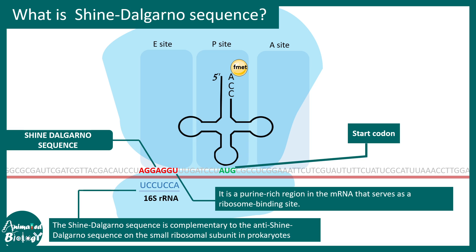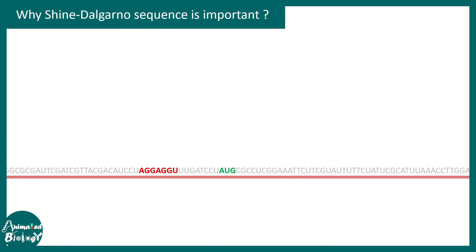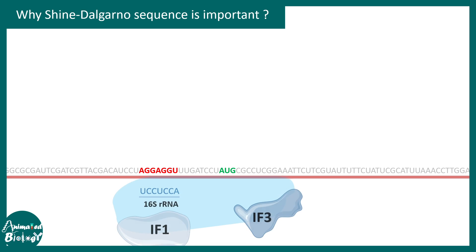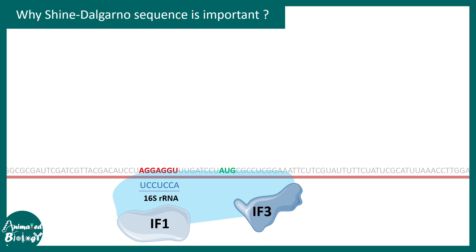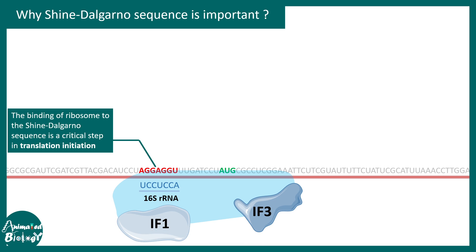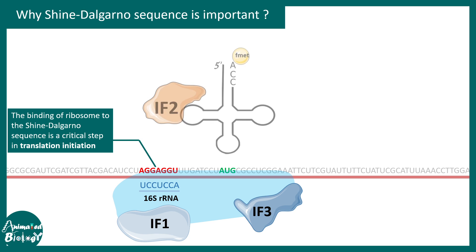The 16S rRNA portion present in the small ribosomal subunit is complementary to this Shine-Dalgarno sequence. This facilitates ribosome binding to the Shine-Dalgarno sequence, and this is a crucial step in translation initiation.